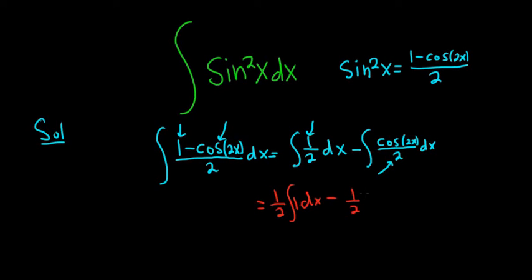Minus 1 half, and then here we have cosine 2x dx. All right, so when you integrate this piece here, this 1, you're just going to get x, because the derivative of x is 1. So here you just get 1 half x.